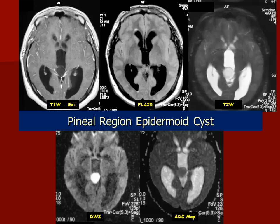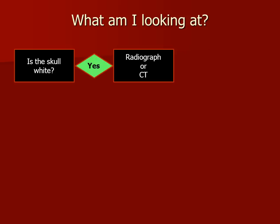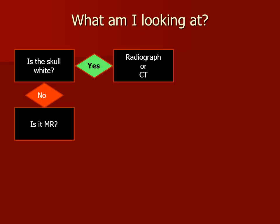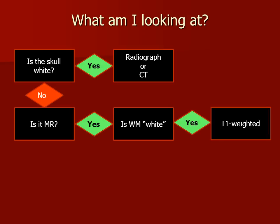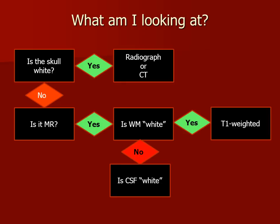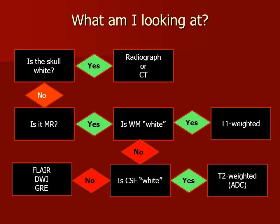So when we see this very confusing pattern of images, we can either memorize and do pattern recognition for the different pulse sequences, or we can sort it out using our algorithm. If the skull is white, it's a radiograph or a CT. If it's an MR scan and the white matter is white and typically water is dark, it's going to be a T1 weighted image. If white matter is actually darker than gray matter and the CSF is white, it's probably a T2, but it might be an ADC map. And if CSF is dark, it might be a FLAIR image or a diffusion weighted image.